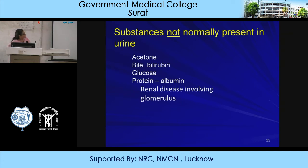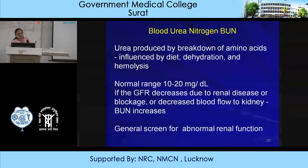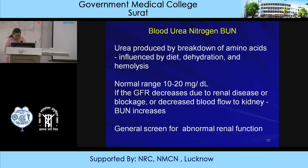Substances not normally present in urine but found in certain disorders include acetone, bile, bilirubin, glucose, protein, and albumin - albuminuria is not normally present and indicates renal disease involving the glomerulus. Regarding blood urea nitrogen (BUN): urea is produced by breakdown of amino acids, influenced by diet, dehydration, and hemolysis. Normal range is 10 to 20. If GFR decreases due to renal disease or any blockage or ischemia, BUN increases. It is a screening test for abnormal renal function.